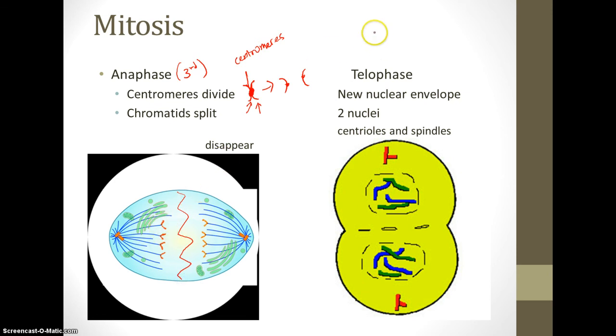Then we have telophase. Telophase, because the cell kind of looks like a telephone. What occurs here is that we have the split in the middle, and the new nuclear envelope starts to appear. We have the chromatids, and there's an envelope starting to form around each new pair. That is telophase.